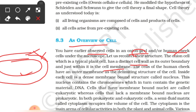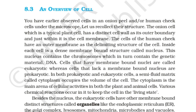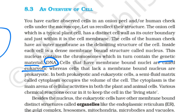Inside each cell is a dense membrane-bound structure called nucleus. This nucleus consists of chromosomes, which in turn contain the genetic material DNA. A cell that has a membrane-bound nucleus is called eukaryotic. The eukaryotic cell has a specific nucleus containing genetic material.